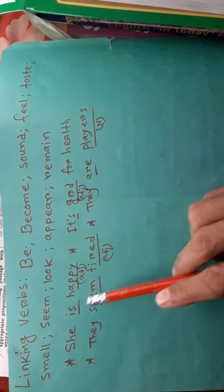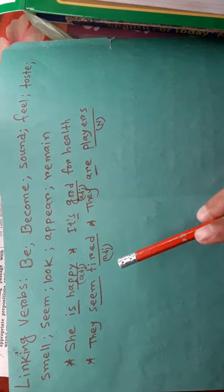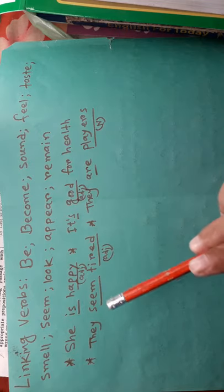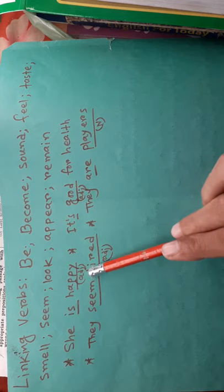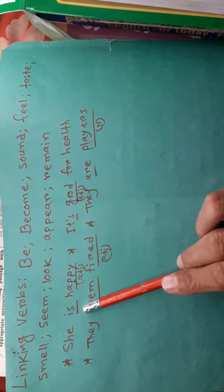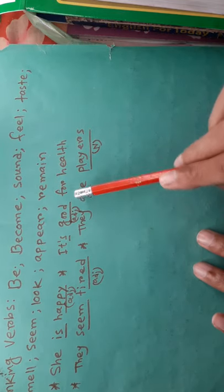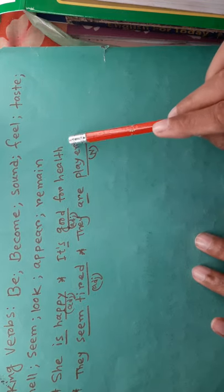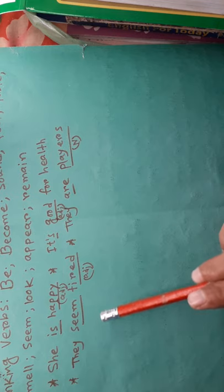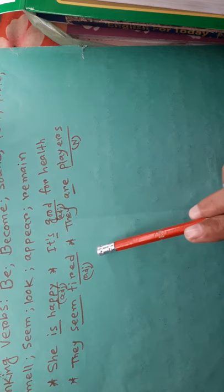For example: 'She is happy' — 'is' is the linking verb, 'she' is the subject, 'happy' is the complement (adjective). 'It's good for health' — 'is' is the linking verb, 'good' is the complement. 'They seem tired' — after 'seem,' we use 'tired' as a complement (adjective). After linking verbs, we use an adjective or noun.